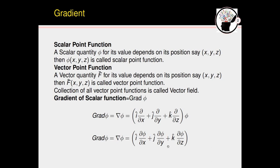When we operate this del operator on phi, it becomes: del(phi) = i(∂phi/∂x) + j(∂phi/∂y) + k(∂phi/∂z). Remember, the gradient of phi can only be found for a scalar function, not for a vector function. So phi here is nothing but a scalar function.